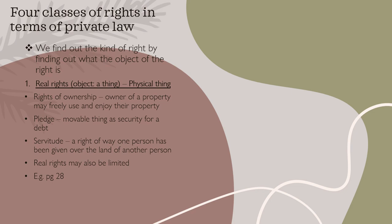A pledge, which is a moveable thing, is a security for debt. And then we talk about servitude, which is the right of way one person has been given over the land of another person. On page 28, it talks about real rights and how they can be limited.